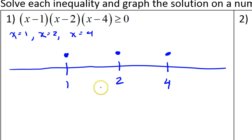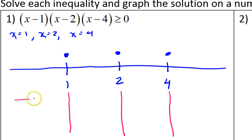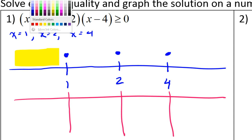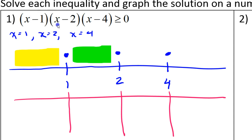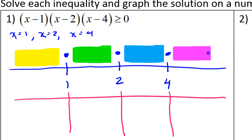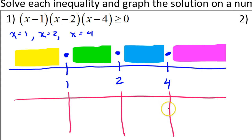Now we have divided the number line into four intervals. We have this zone over here, this zone, this zone, this zone. Maybe I'll just color it so I can refer — we've got the yellow zone, the green zone, the blue zone, and the pink zone. We've divided the number line into those four intervals.